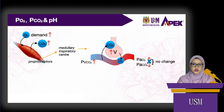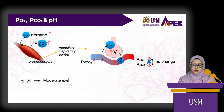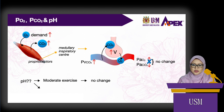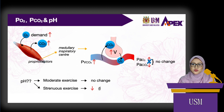What about pH? During moderate exercise, arterial pH does not change. But during strenuous exercise, the arterial pH may decrease because the exercising muscles produce lactic acid.